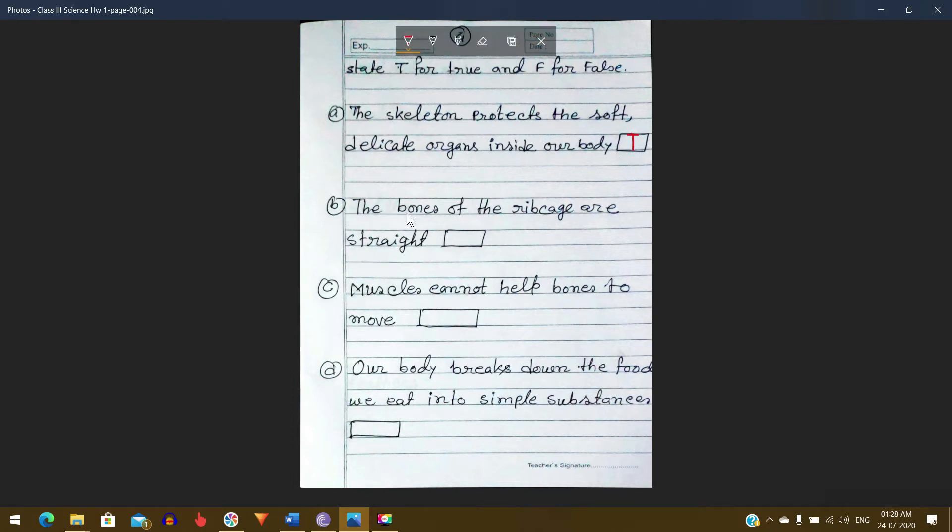Next, question number B: The bones of the ribcage are straight. False.